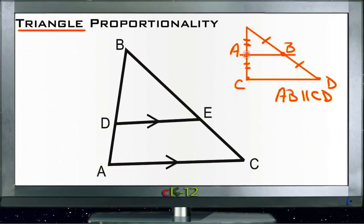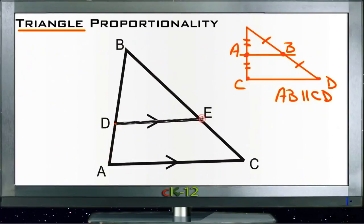There's a similar theorem that involves proportionality. It doesn't require that we use the midpoints — we can use any point along the sides of the triangle, as long as the line we draw is parallel to the third side. Then we know that the lengths of the segments above it, comparing here to here,